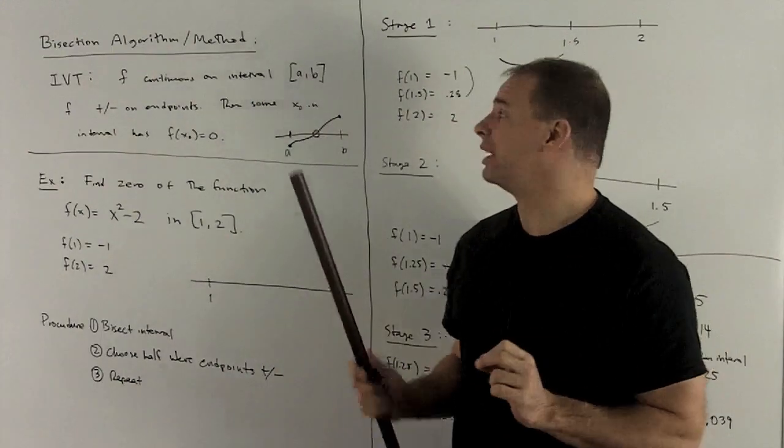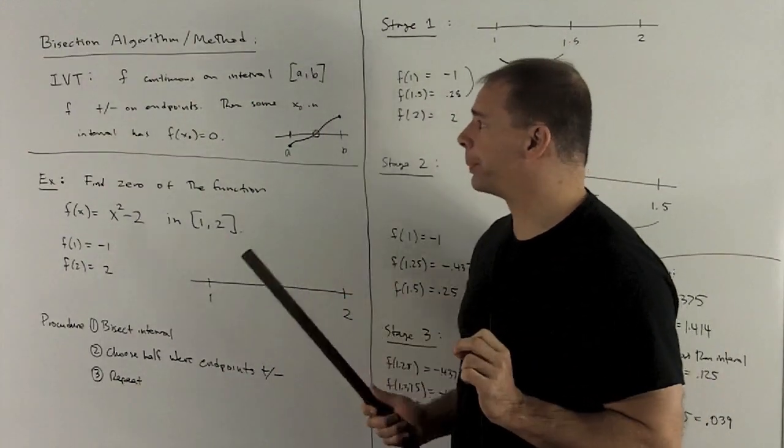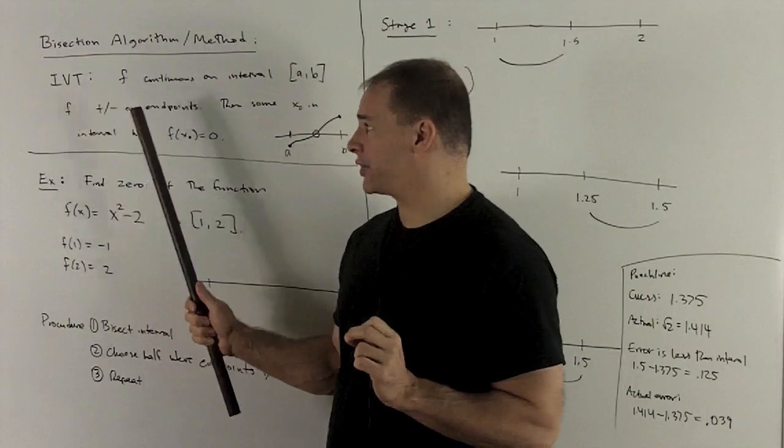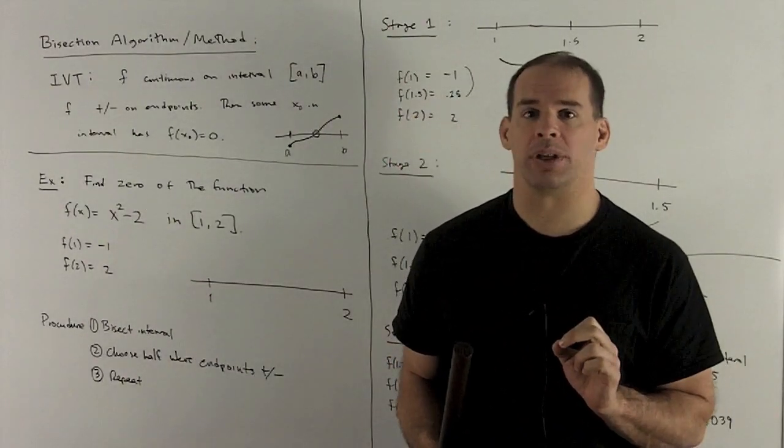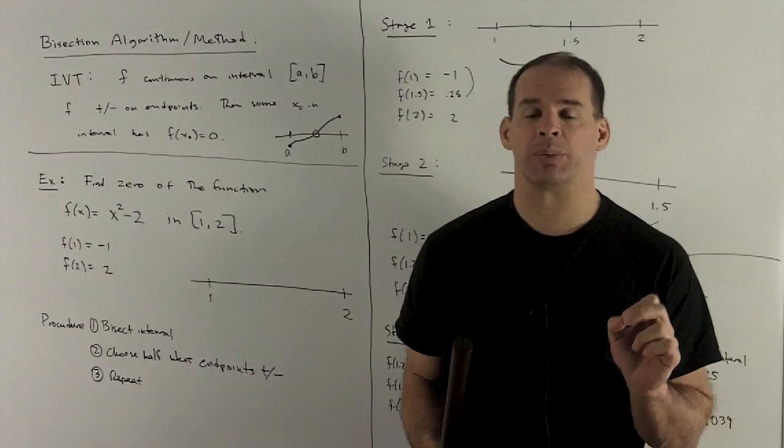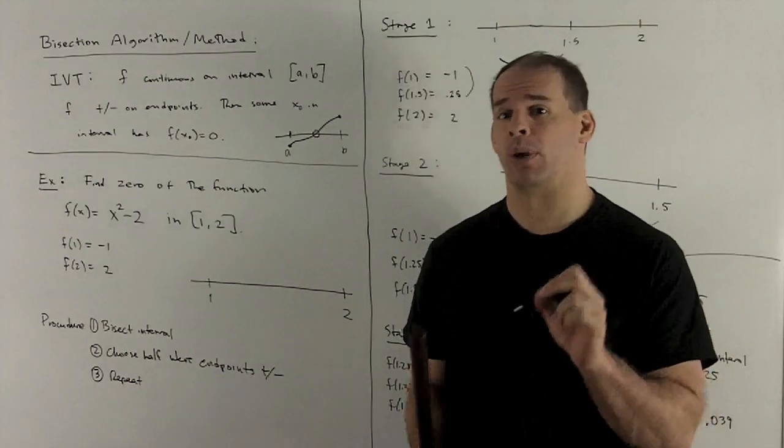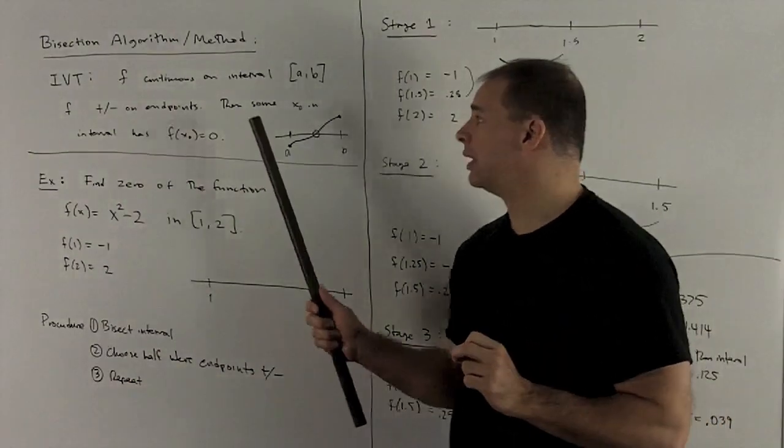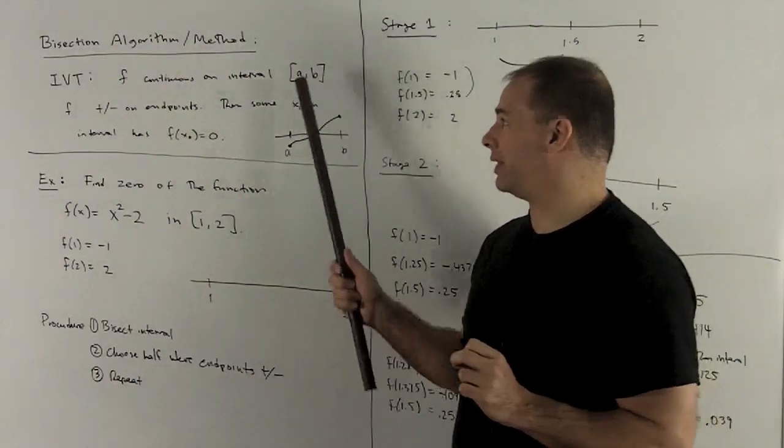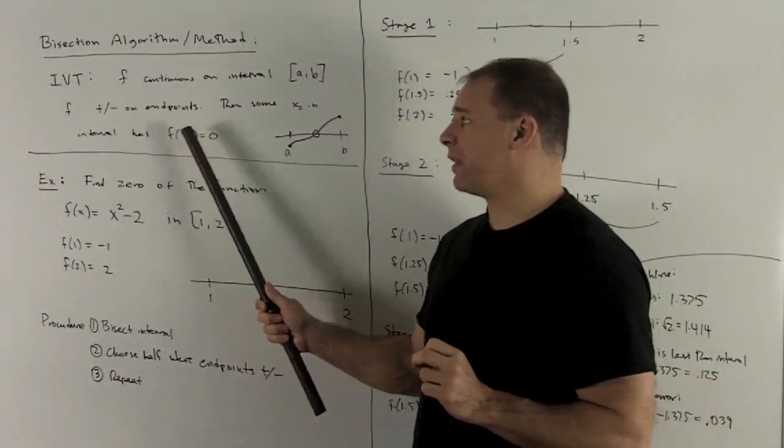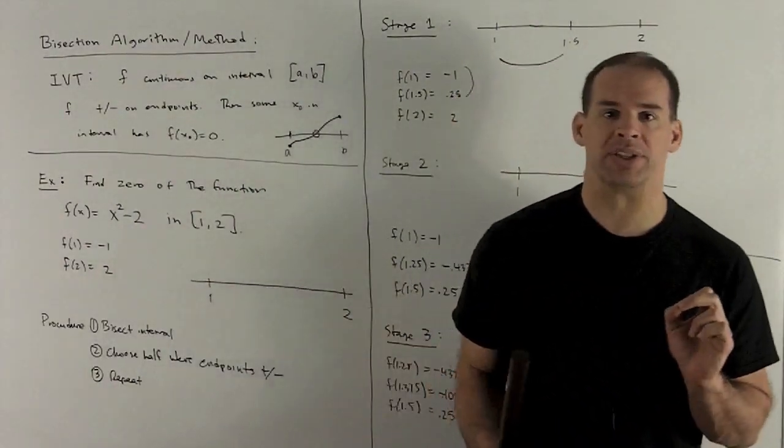So that means f is defined at the endpoints. f is going to take on positive and negative values on the endpoints. It doesn't matter which is which, but one is going to have a positive value, one is going to have a negative value. Then there's going to be some x₀ in this interval, such that the function evaluated at x₀ gives me 0.